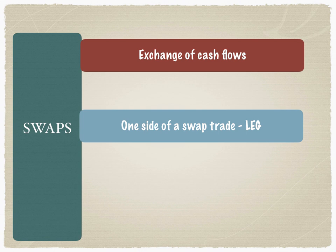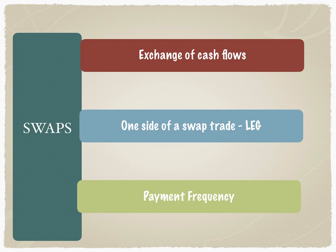In an interest rate swap, for example, you can have a fixed rate leg with the counterparty having the floating rate leg. It's very important to be able to identify these legs. The swap also clearly specifies the payment frequency — how often the cash flows associated with the swap will be exchanged: whether quarterly, semi-annually, or, like a currency swap, annually. All of that must be clearly mentioned in the contract between the two counterparties.